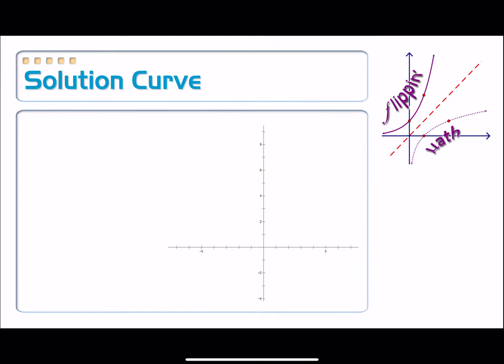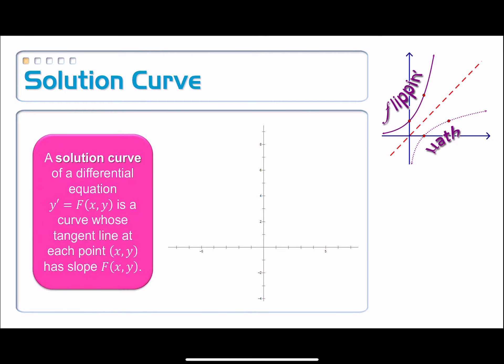After having plotted a slope field of about five or six points, they might ask you to draw in a solution curve through some initial point. A solution curve of a differential equation of the form y prime equals a function of x and y is just a curve whose tangent line at each point in the coordinate plane has that particular slope that y prime equals f(x, y).